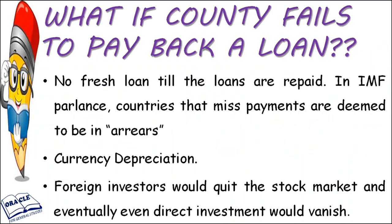Now, taking and giving loans is fine, but if a country takes a loan and does not repay it, what does IMF do? IMF does not give that country any future loans until it repays the old loan. Such countries are also given the tag of ARIAS (arrears). Additionally, that country's currency value falls rapidly, no foreign investor invests in the stock market, and in a nutshell, the country's economy suffers heavy losses.